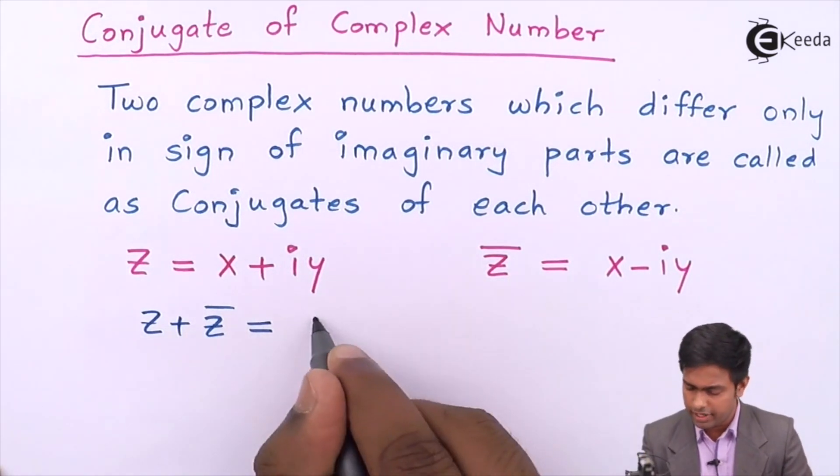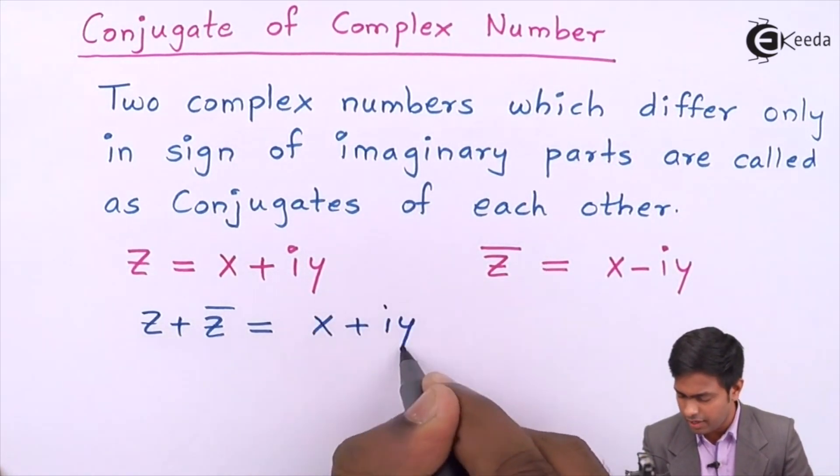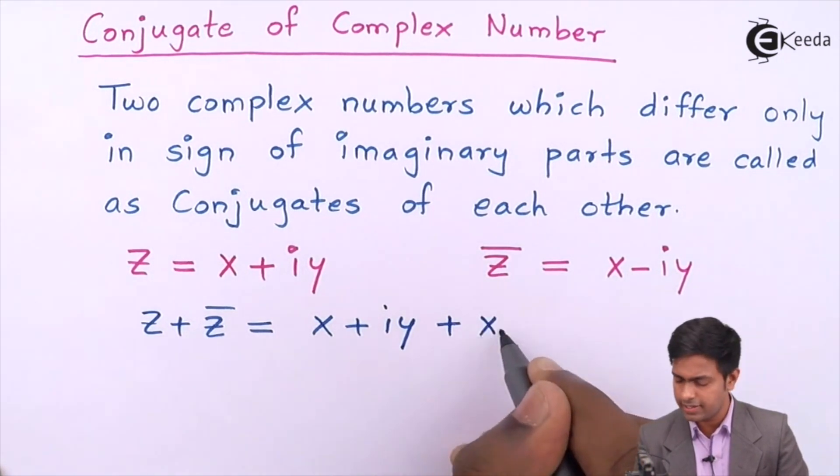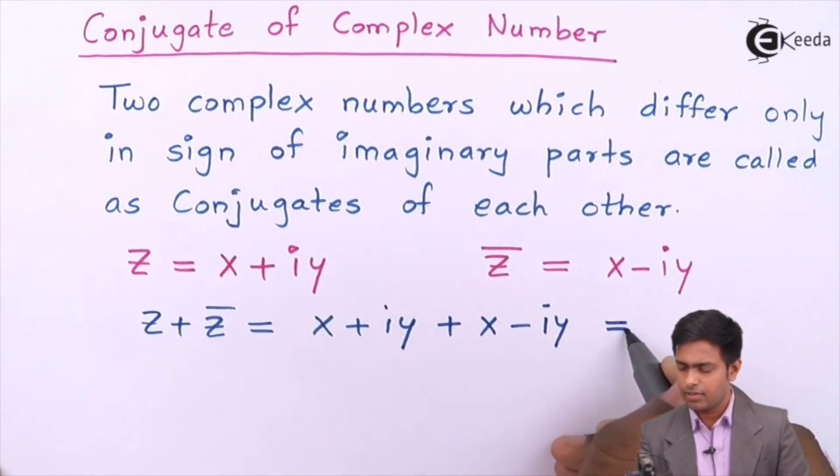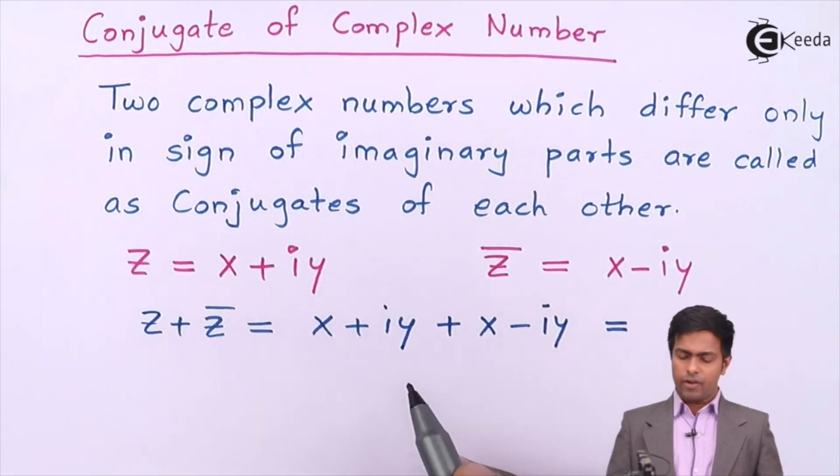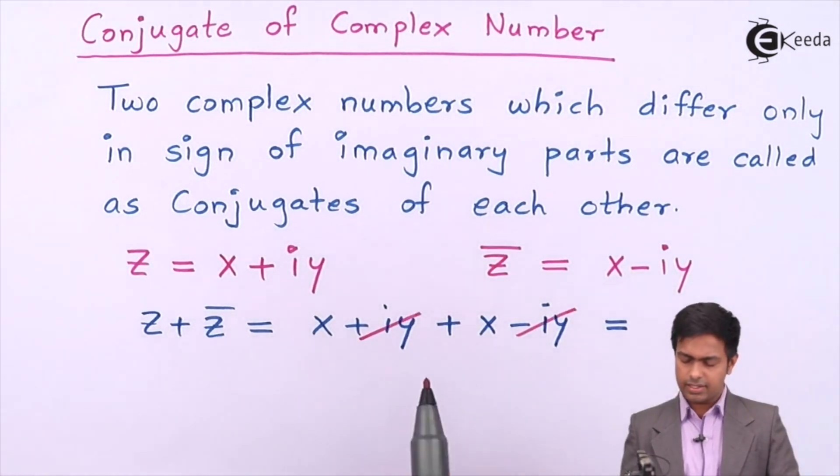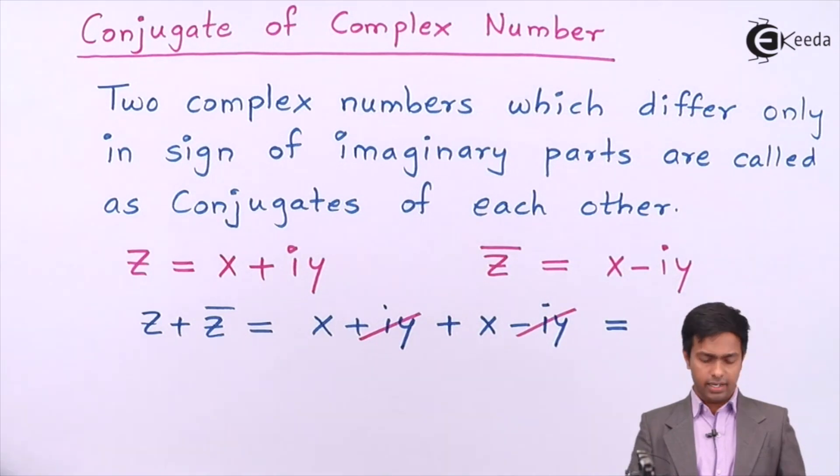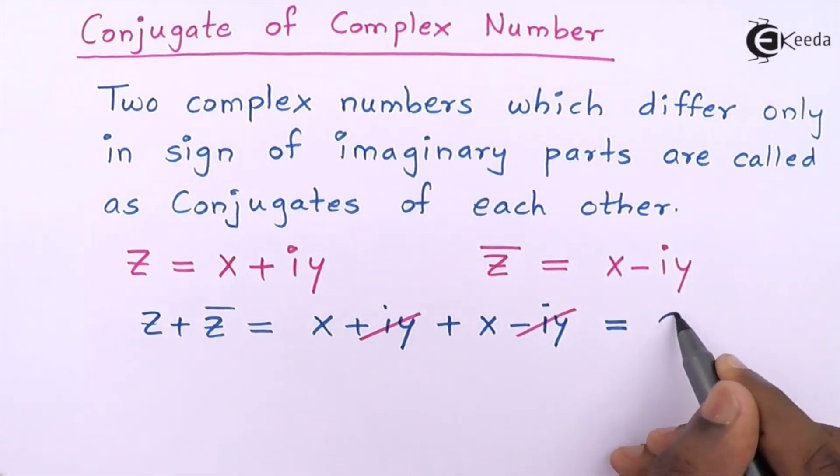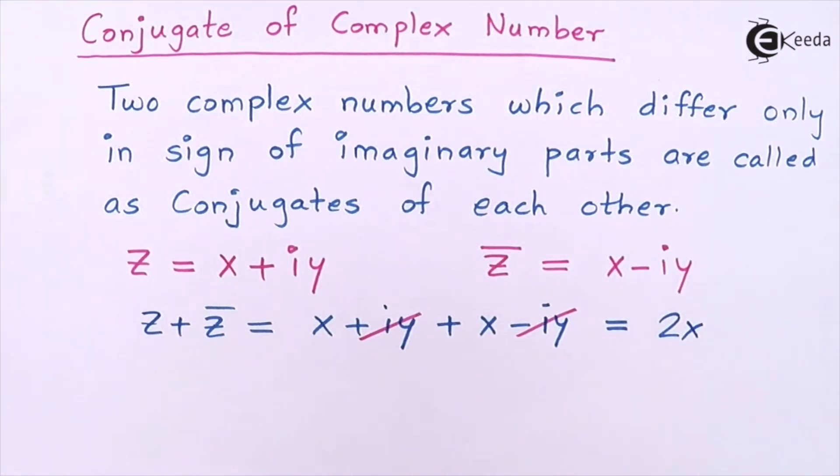Then we will get x + iy plus value of z̄ is x - iy. That iy and minus iy, we can cancel; they have opposite sign. And this x plus x will give us 2x. So the addition of complex number which is conjugate is a real part.